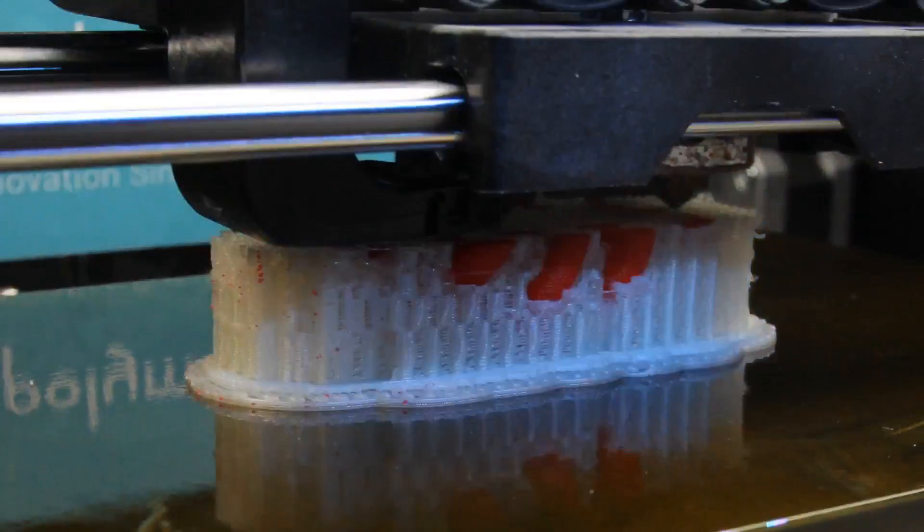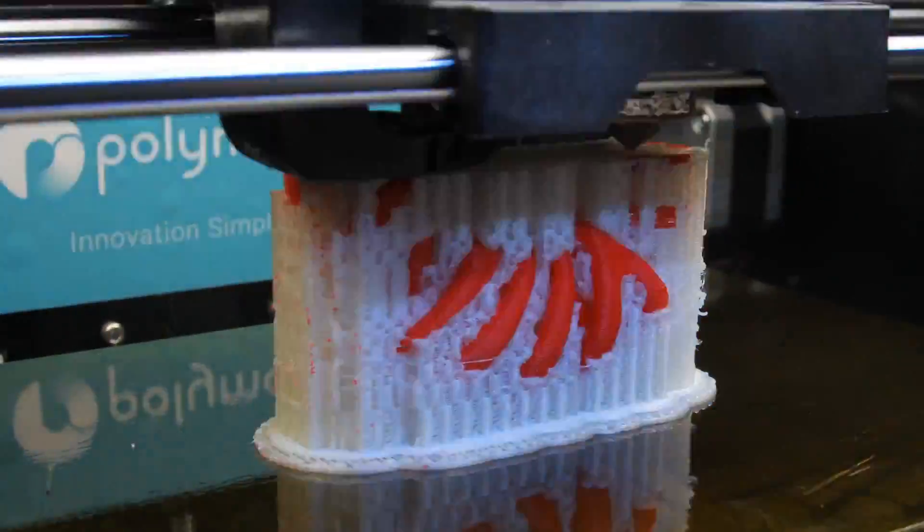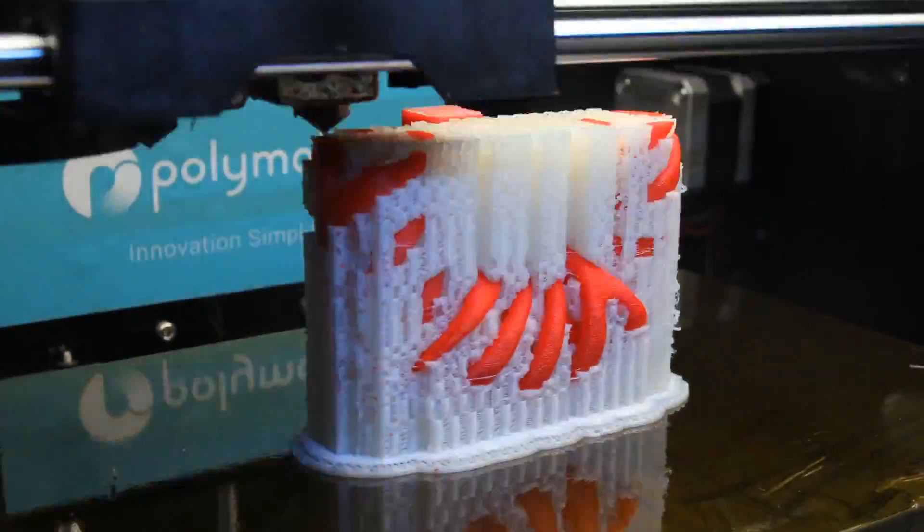702 is a brand new dissolvable support material, specifically engineered to generate fine detail support which can be completely dissolved in isopropyl alcohol.